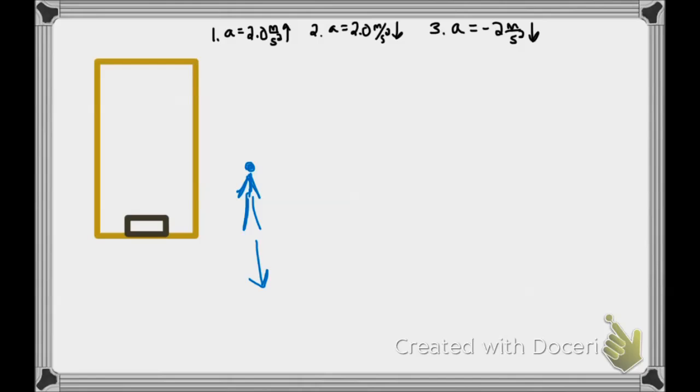Now this student has a weight on earth of 500 Newtons, meaning that the student has a mass of 50 kilograms, since we're using little g to be 10 meters per second squared. The student hasn't even gotten on the elevator yet, but the ground or the floor is pushing up with a normal force. Now the normal force is equal to 500, but let's prove that.